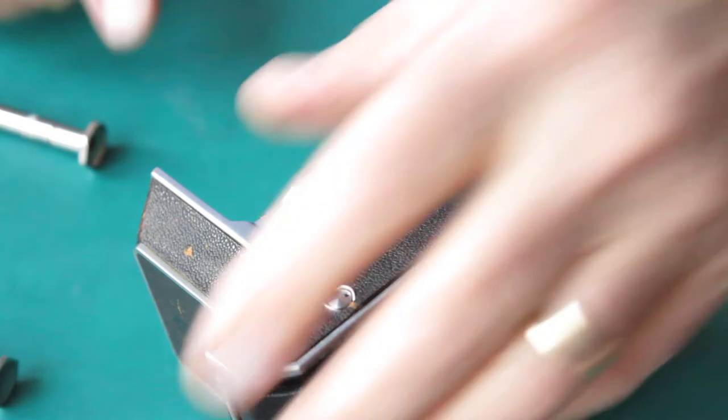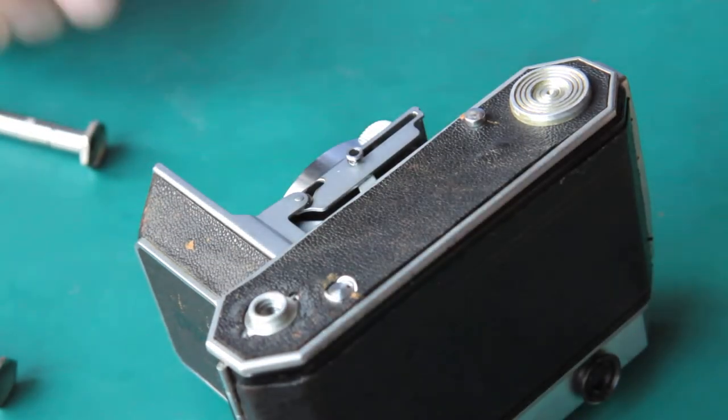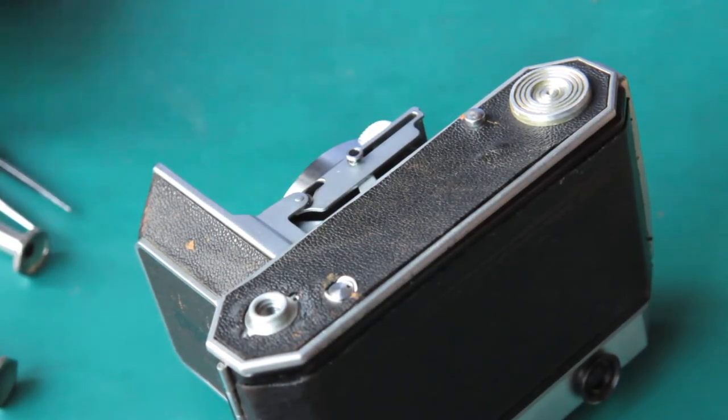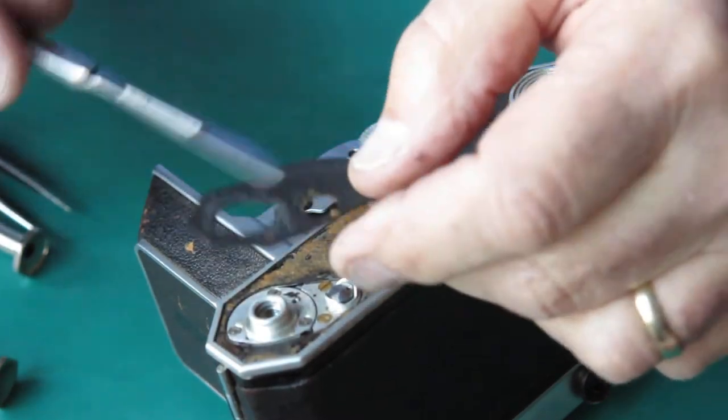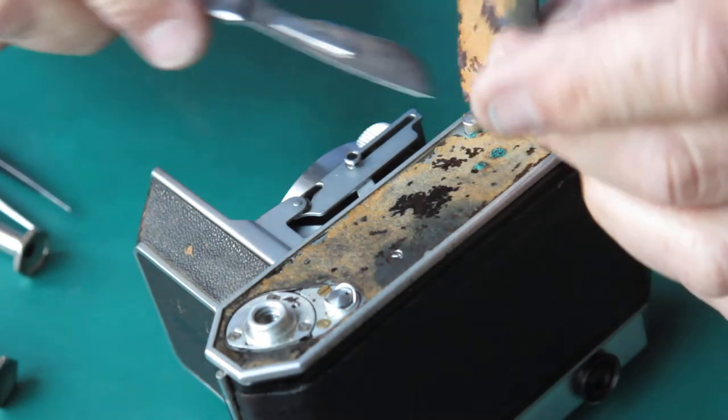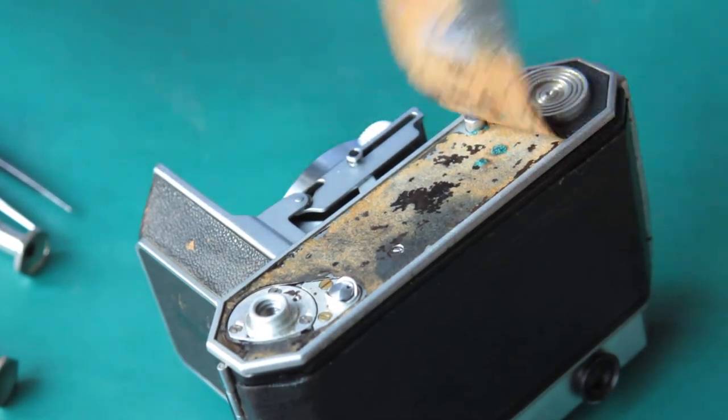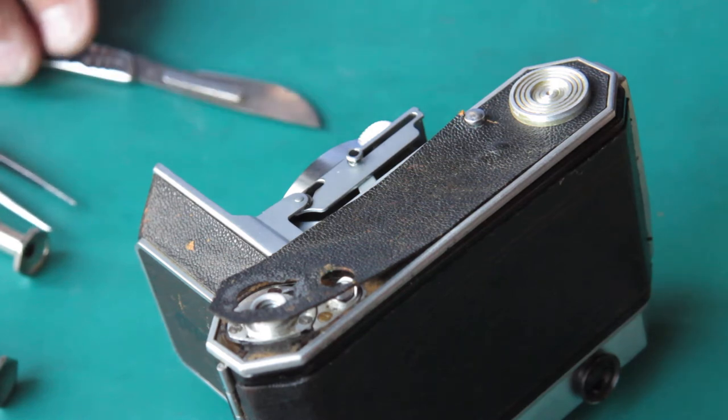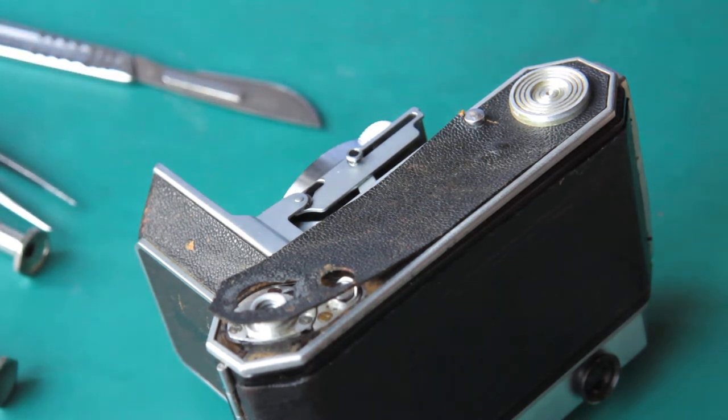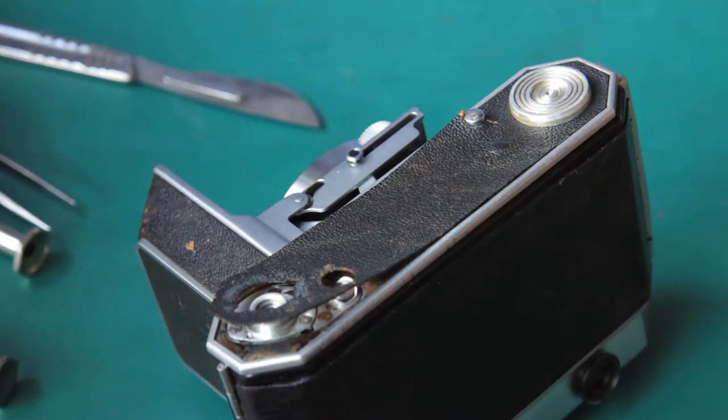I'm going to be gluing this leather back down. First I need to have a look at the state this leather. I know I've got a couple of tears in it. One here and one here. I've also got a couple of Zeiss bumps under there that are going to need cleaning up. So better get those cleaned out.